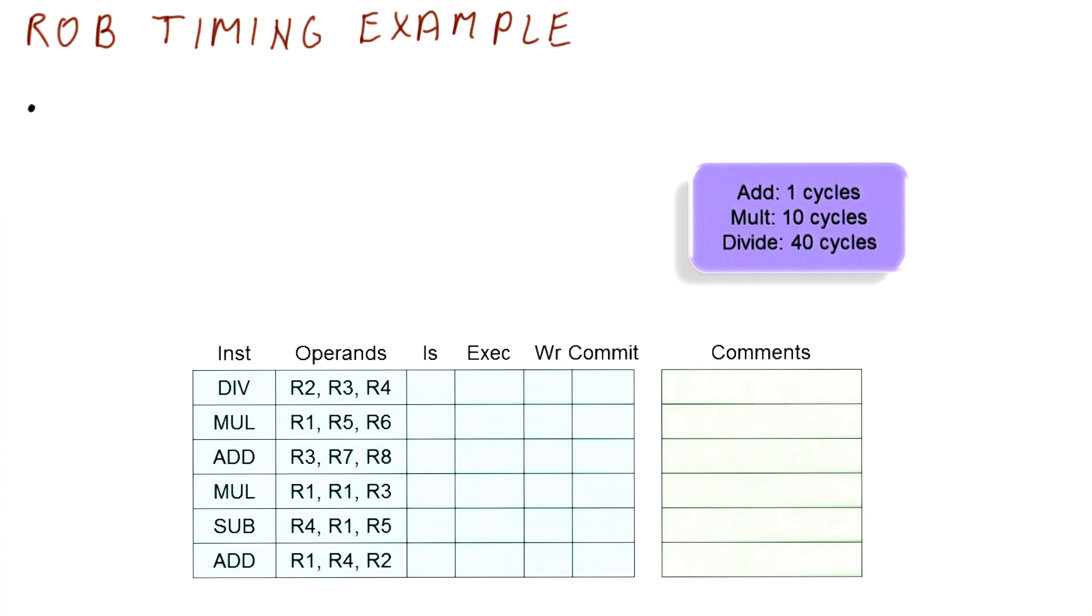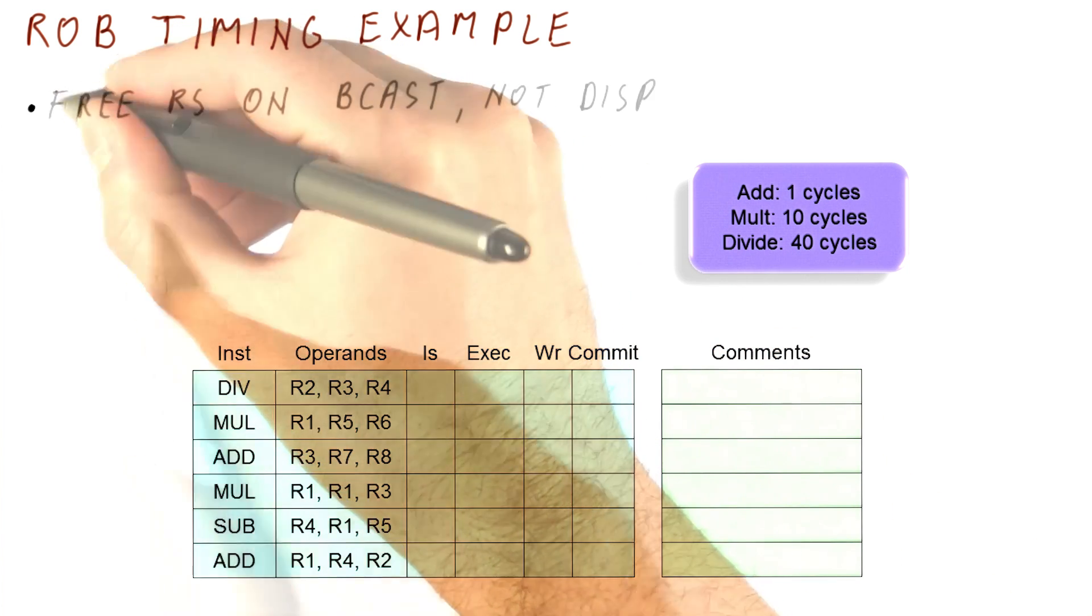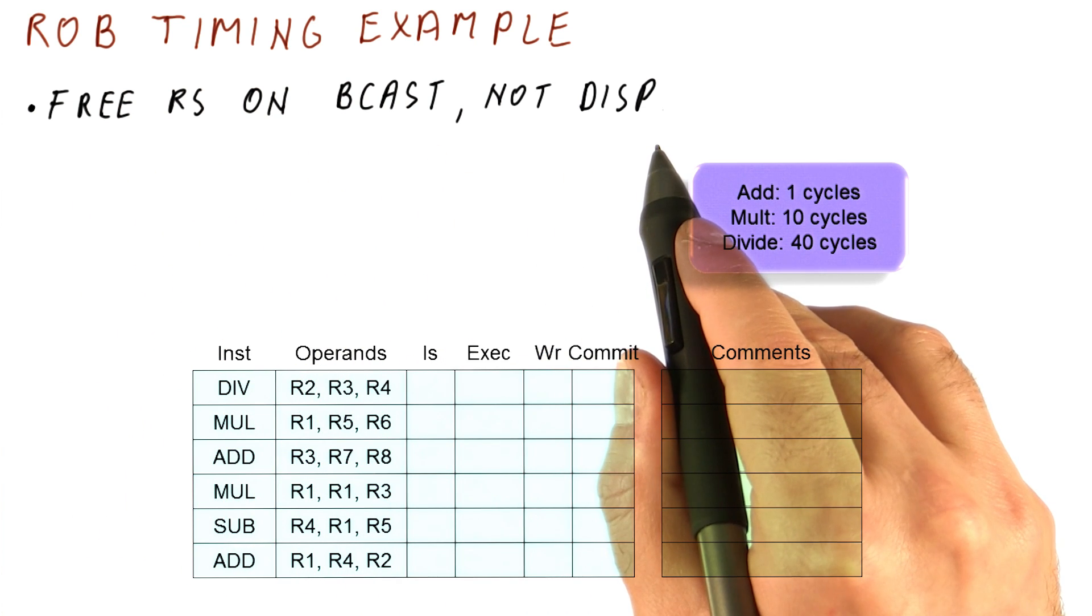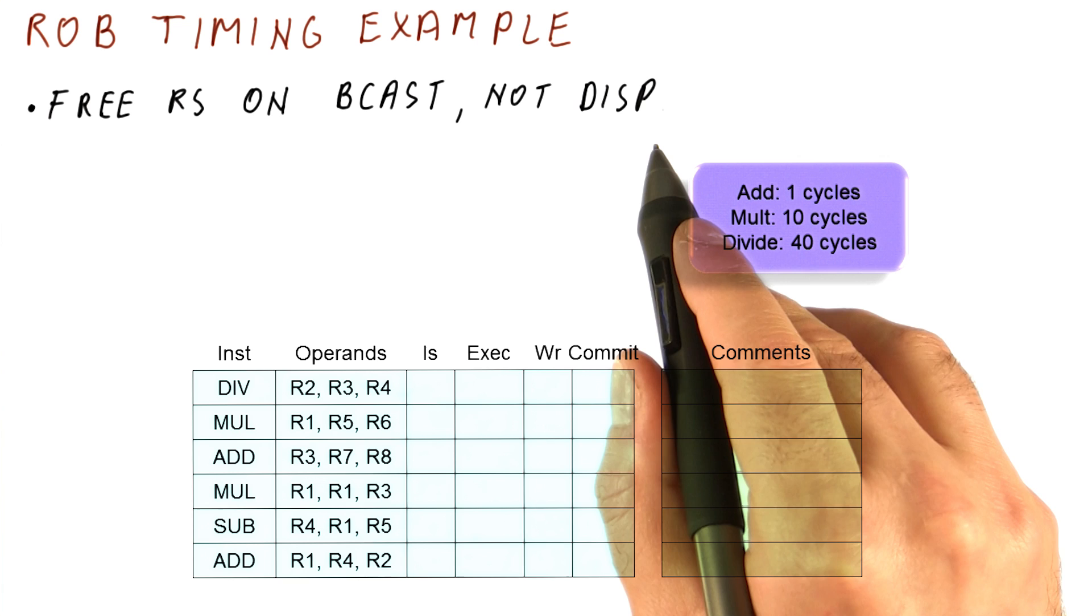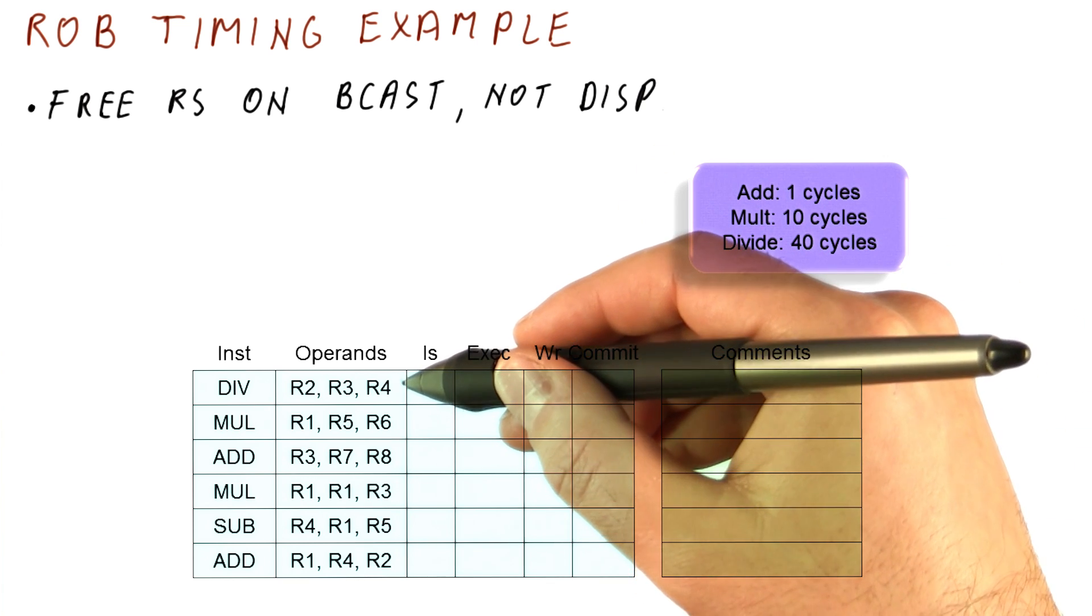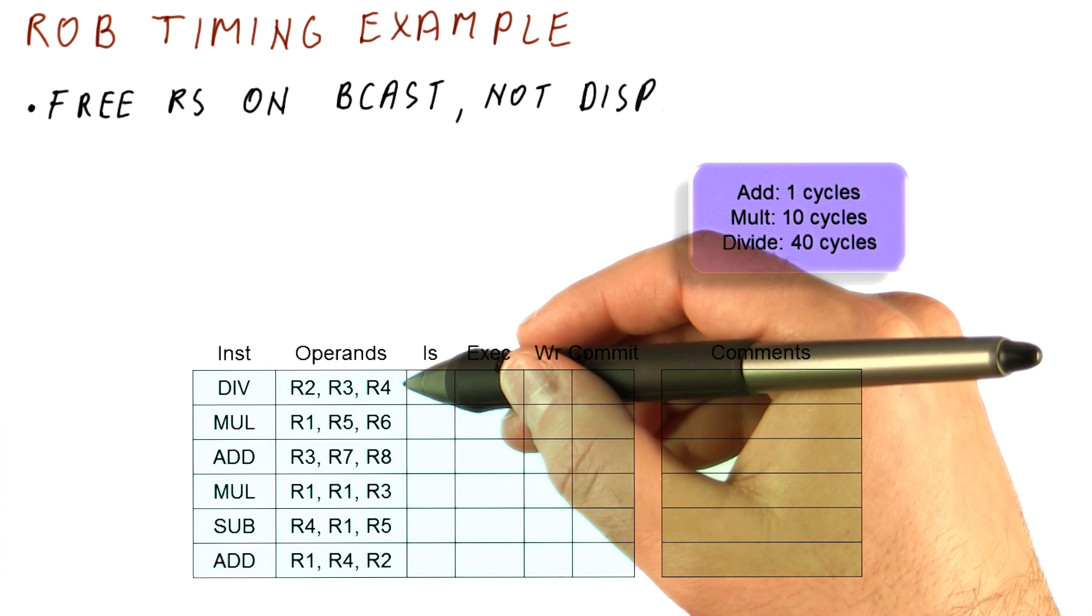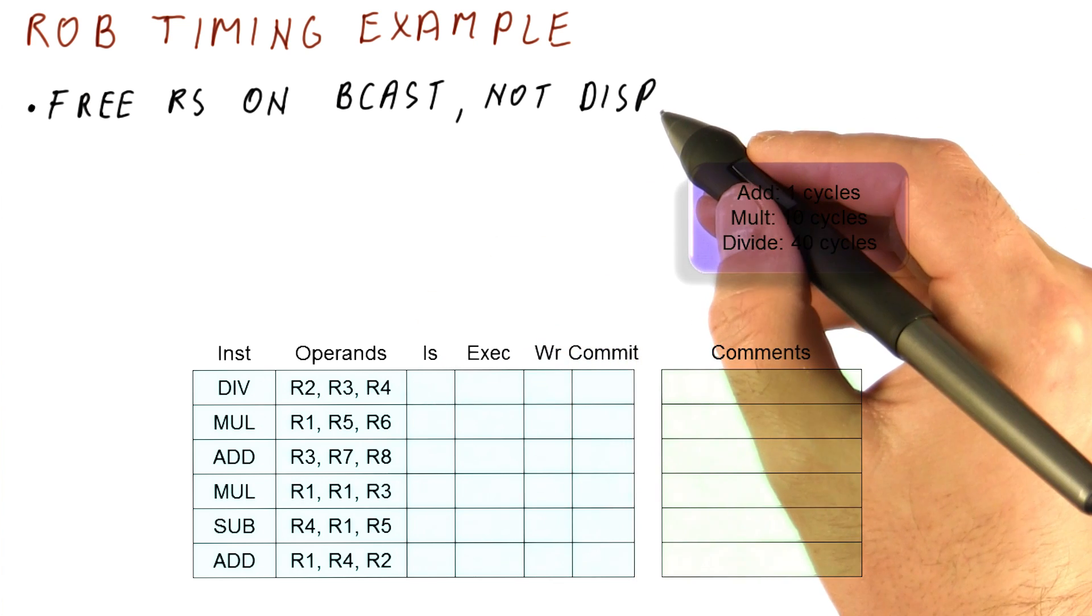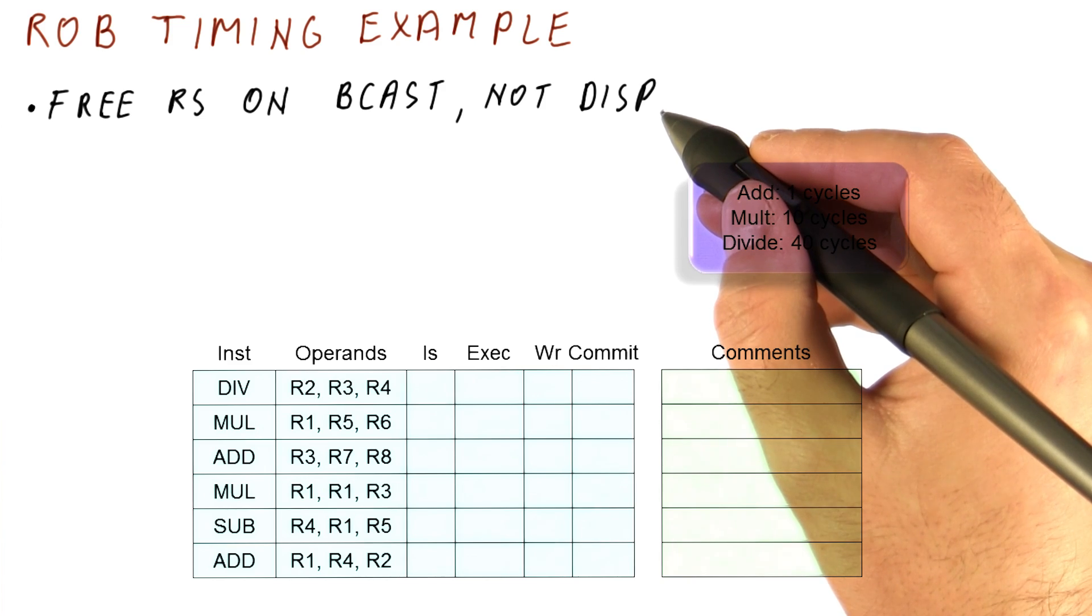This time let's make it a bit different from before. First, our processor will free a reservation station when the result is broadcast, not when we actually dispatch the instruction. This can happen, for example, because the processor is doing something speculative, and it wants to keep the instruction until it's really sure that the instruction should have executed. So some of the processors actually do this, so let's try an example with this.